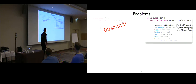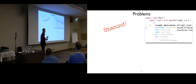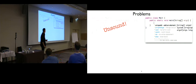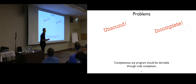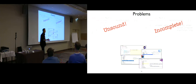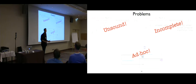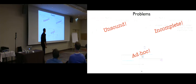Soundness in this case means that the resulting program should have no additional syntax errors. There's also the case where the list of proposals contains just a few statements in the language — for example, in this program I want to add an assignment, and there's no syntactic proposal that allows me to do that. We say the completion framework is incomplete, where completeness means that any program should be derivable through code completion. In general, this implementation is just ad hoc — a list of proposals for a few statements.